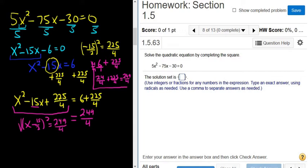Now, to finish, you take the square root of both sides and use the square root property. So you get x - 15/2 equals the square root of 249, and the square root of 4 is 2. And you always put a plus or minus.